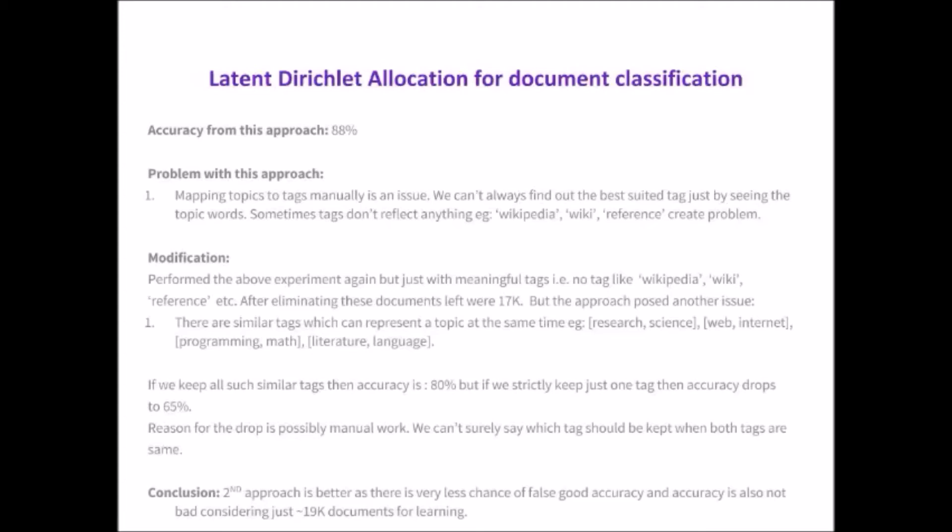We can say that second approach, that is representing a document in topic space, is a bit better than TF-IDF matching because chances of getting false good accuracy is very less. Now Anvish will explain other approaches that we can use for document classification.